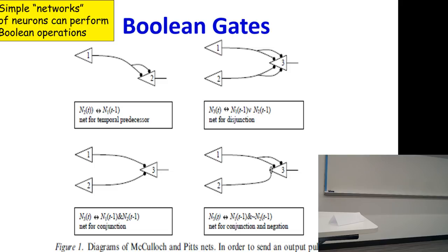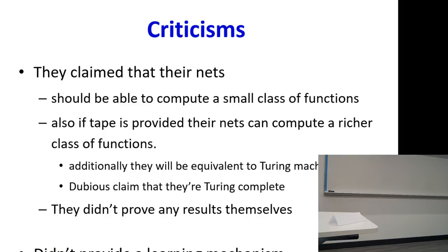With this simple model, you can perform all kinds of Boolean operations. For example, every time one fires, two fires because it's expecting two inputs — so this is just a delay. Here, if either one or two fire, this is going to get two inputs — that's an OR. Here, both of these must fire and only then will this fire — that's an AND. Here, if one fires, three will fire, but only if two is not active — so it's one AND NOT two. You can perform all kinds of Boolean operations with networks of these basic units.